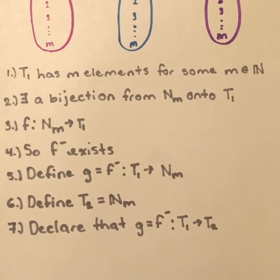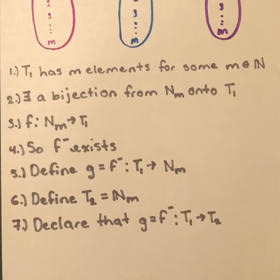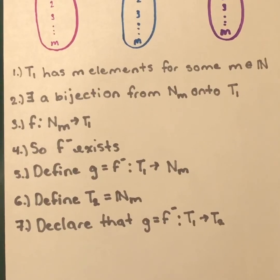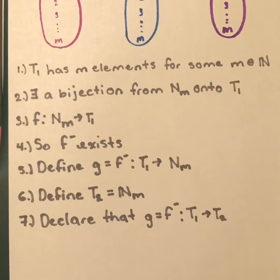Suppose that the hypothesis is true, so T1 is finite. Then by definition T1 has m elements for some m elements of the natural numbers.